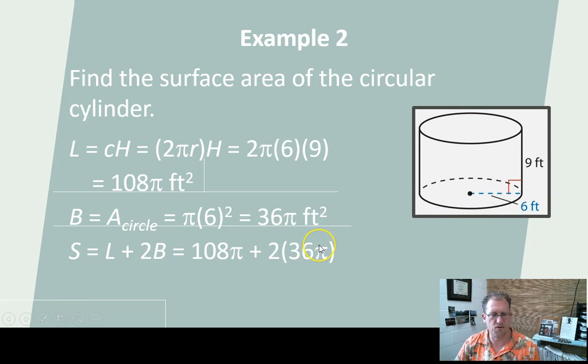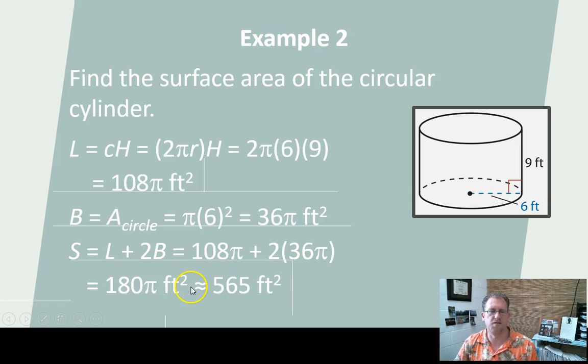108π plus twice 36π is going to give me 180π as my total answer. And if I wanted to resolve that to an approximate decimal value, that's 565-ish square feet. So that's how you do a cylinder. It's exactly like how you do a prism. It's just round instead of a polygon.